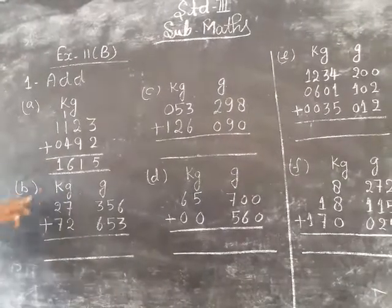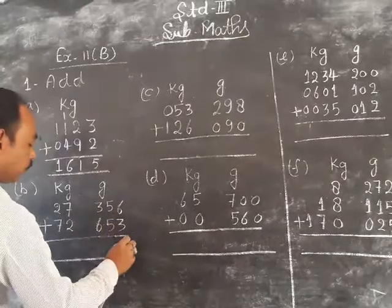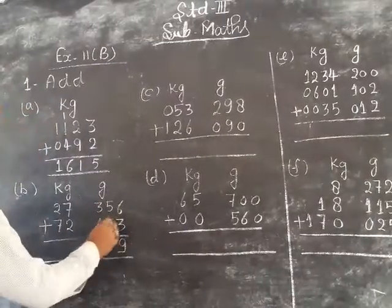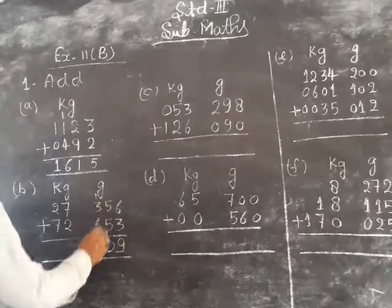Part number B, kilogram gram. So number 3, 6 plus 3, 9. 5 by 10, 10 to 0. Carry 1. 6, 3, 9, 1, 10. 10 to 0.